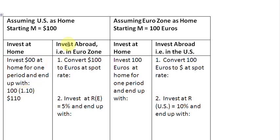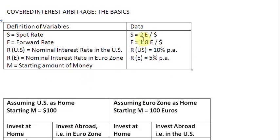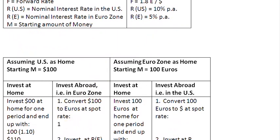But if you want to invest abroad — the second alternative — you are going to have to first convert your starting amount of money, that is $100, into euros at the spot rate. The spot rate is 2 euros to a dollar. Since we want to convert dollars to euros, we are moving from the denominator currency to the numerator currency, so we multiply $100 by 2, giving us 200 euros.